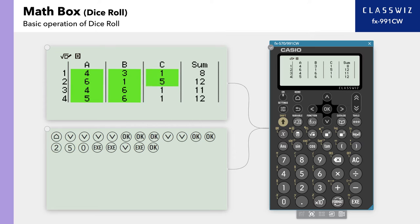A, B, and C, and the sum of all dice for each roll. You can scroll down to see the rest of the rolls.